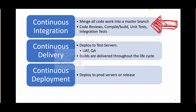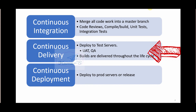Continuous Delivery is the next stage of Continuous Integration. It automatically deploys all code changes to a testing or production-like environment after the build stage. Teams release applications in an automated way to a QA environment. This means there is an automated release process on top of the automated testing process, and developers can deploy their changes at any time by simply clicking a button, without manually placing the artifact to a specified location.